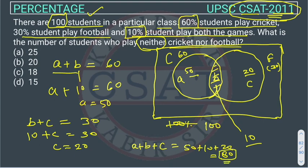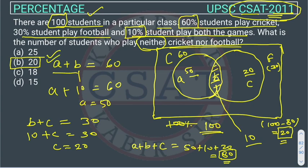How many students are not playing any games? Total students are 100, so we subtract 80 from 100, which gives us 20. There are 20 students who are not playing any games, so the answer is option B. I hope you all have understood!